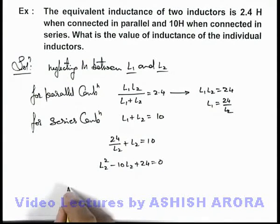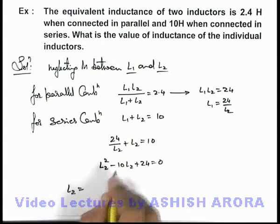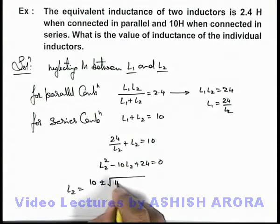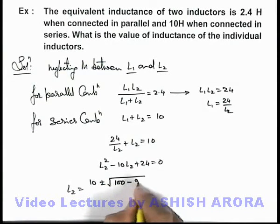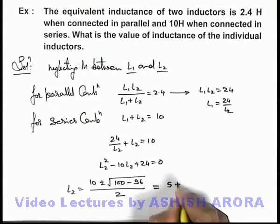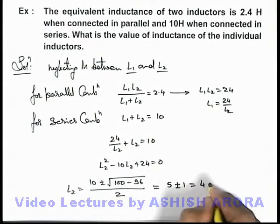So this is a simple quadratic equation of which the result can be given as 10 plus minus root of 100 minus 96, b square minus 4ac, divided by 2. So here you can see this 10 plus minus 2 by 2, so this can be written as 5 plus minus 1, this will be 4 or 6.